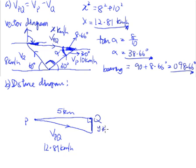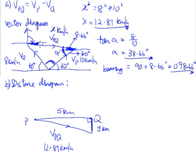Looking at this right-angle triangle in our distance diagram, we have 5 kilometers as the initial separation between P and Q, and we're looking for Y kilometers. We're missing an angle inside the triangle to solve it. We previously spent a lot of time finding the small blue angle of 8.66 degrees, which is measured against the horizontal. Since the 5 km PQ line is horizontal, this angle in the distance diagram is the same 8.66 degrees — we transplant it from the vector diagram.